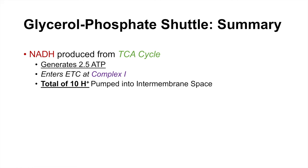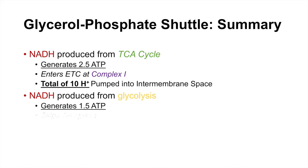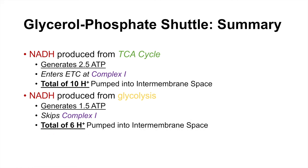When we produce NADH from the glycolytic pathway, we don't get as much ATP — it only generates 1.5 ATP. That's because we have to skip complex 1, and remember complex 1 pumps out 4 protons. This reduces the number of protons pumped into the intermembrane space to only 6, so we only get protons pumped across complex 3 and complex 4. Anyway, I hope you found this video helpful — that was a lesson on the glycerophosphate shuttle. If you liked this video, please like and subscribe for more videos like this one. Thank you so much for watching and I'll see you next time.